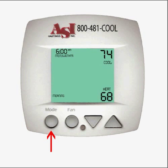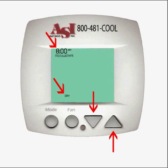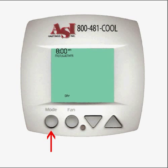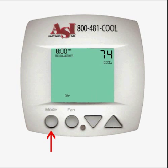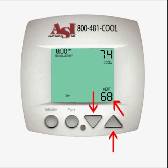Press the mode button. Use the up and down buttons to set the desired day start time. Press the mode button. Use the up and down buttons to set the day cooling temperature. Press the mode button. Use the up and down buttons to set the day heating temperature.